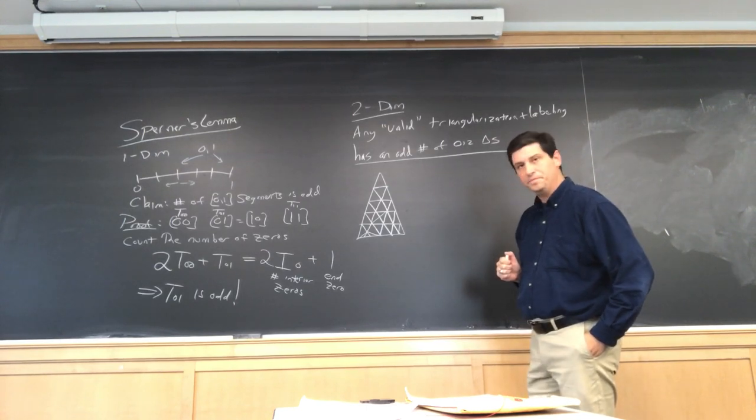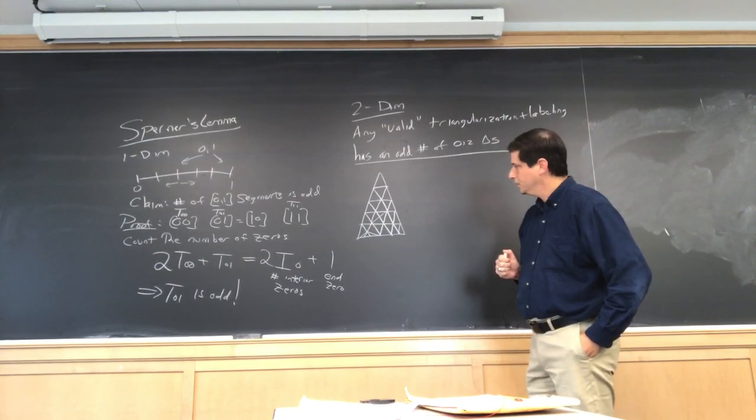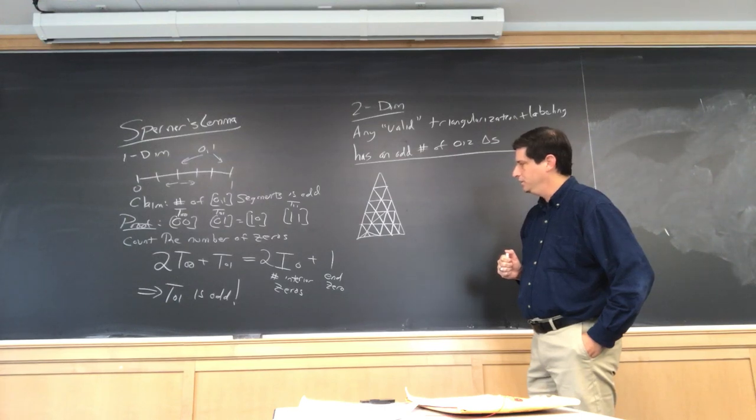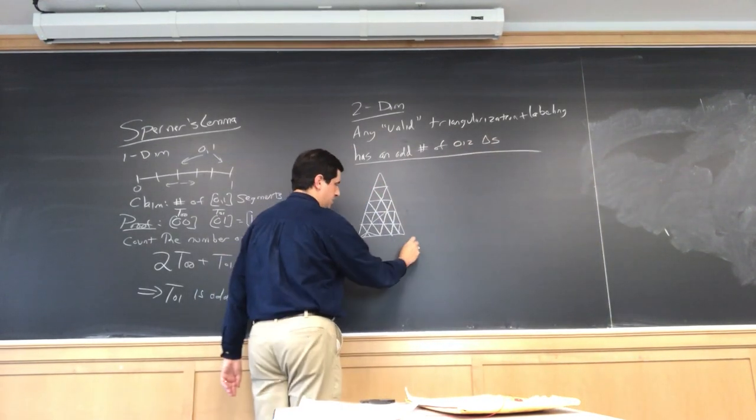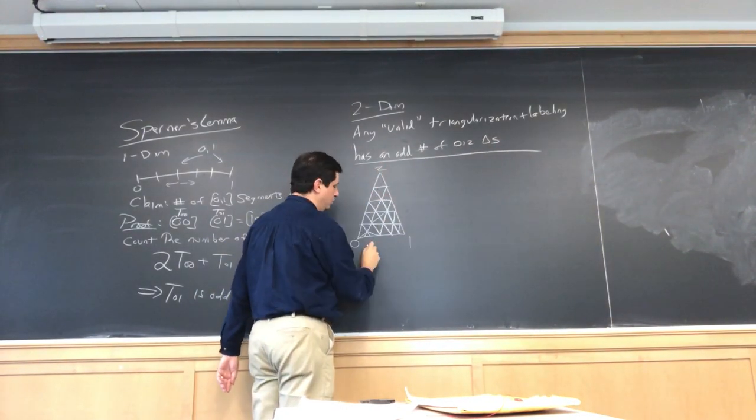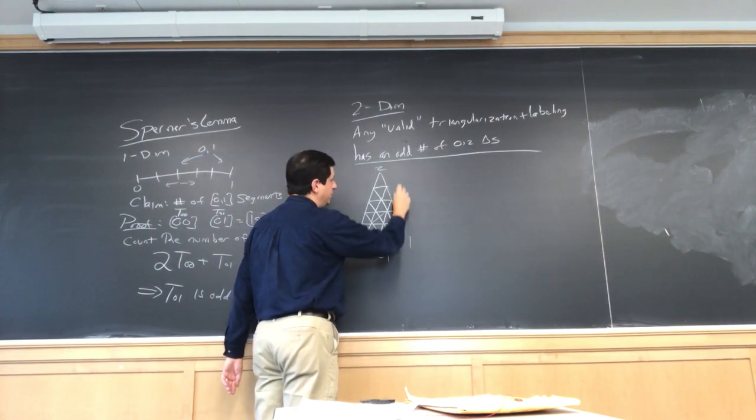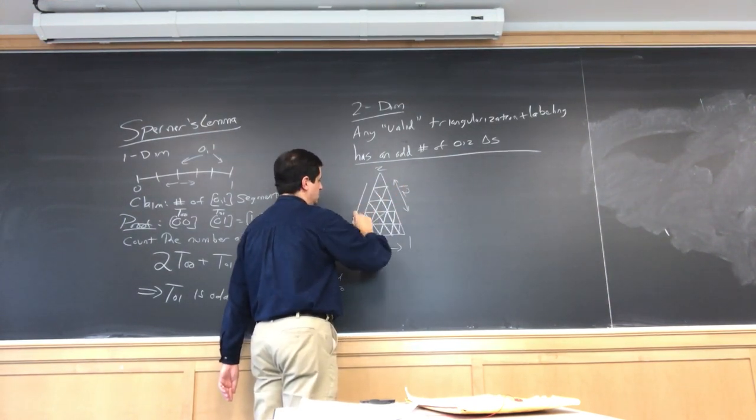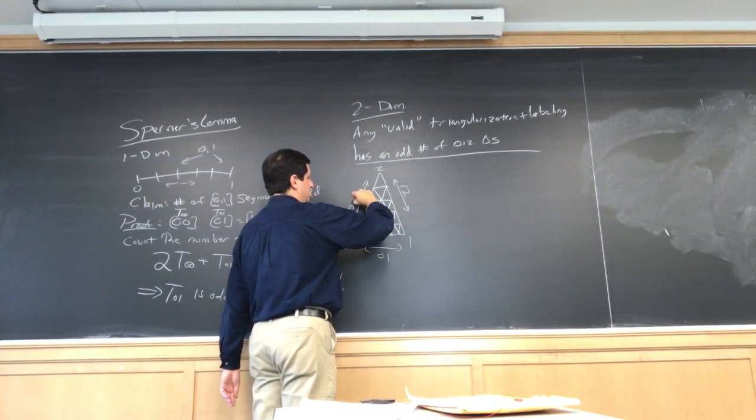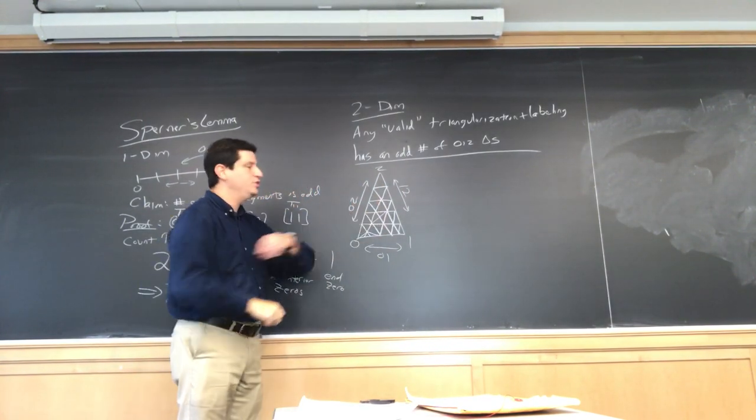Okay, so I've got a bunch of triangles. No triangle shares just part of a wall. You either share an entire wall or none of a wall. And down here, has to be 0, has to be 1, has to be 2. You can only do 0, 1 down here. You can only do 1 and 2 over here. And you can only do 0 and 2 over here. But on the inside, you can do anything.